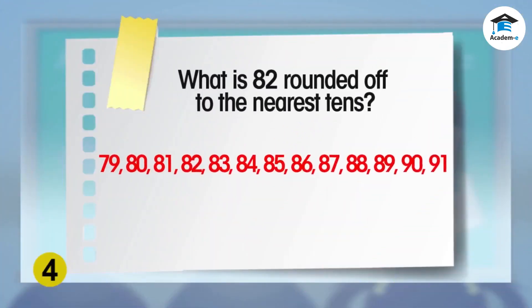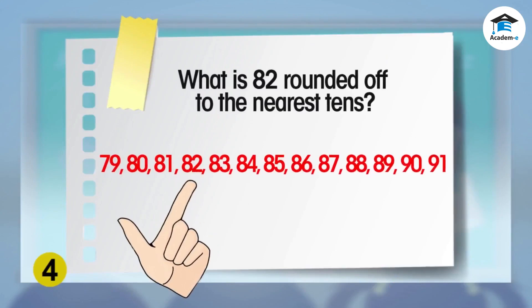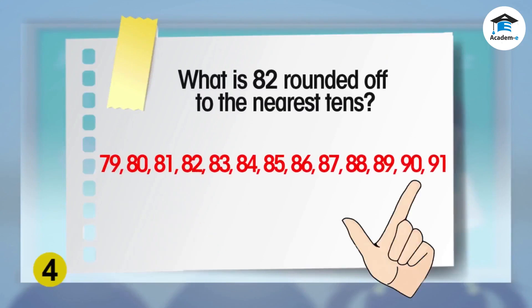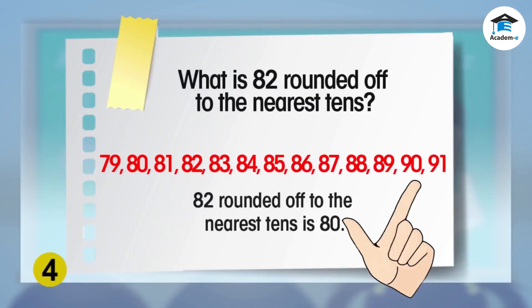Let's look at some examples. 82 is nearer to 80 than to 90, so 82 rounded off to the nearest tens is 80.